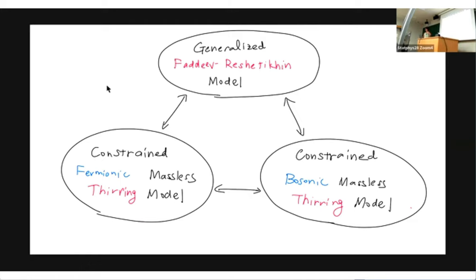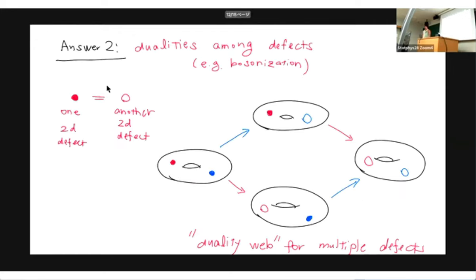Once you understand the relation between different defects, you can have multiple defects, and you can derive dualities between different theories. This is a very general theme. Once you realize that the four-dimensional Chern-Simons theory is useful for understanding dualities, you can try to describe them more systematically — that was question number two — and it turns out it also has a very simple interpretation.